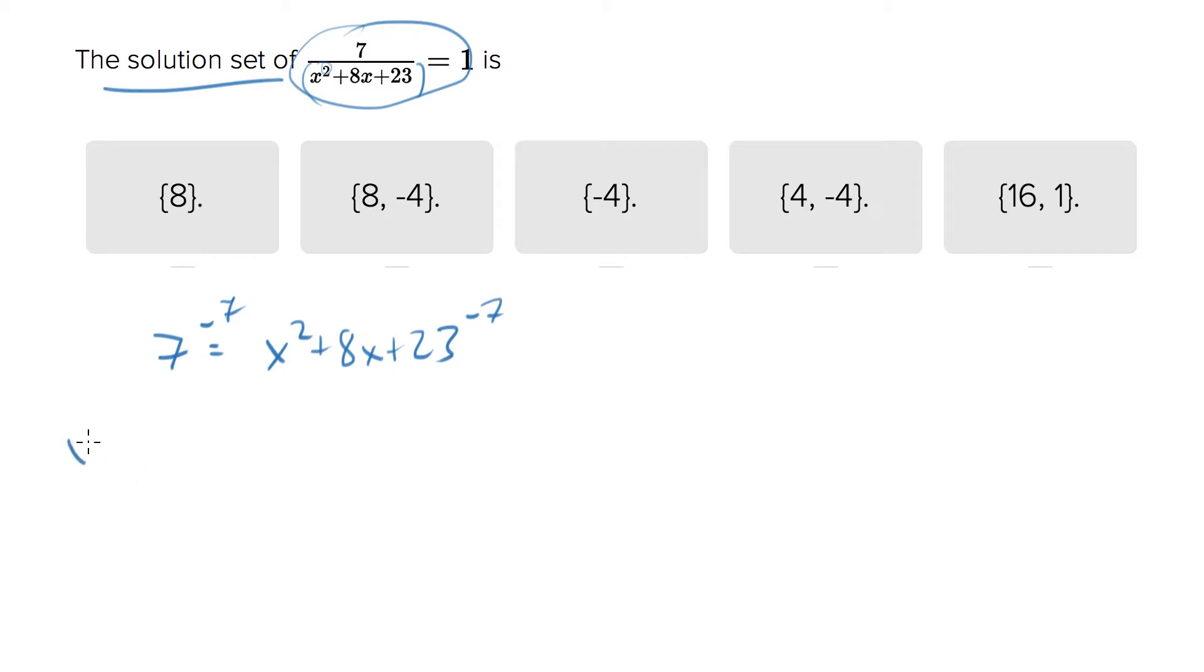Let's keep going on that. x squared plus 8x plus 23 minus 7 is 16, that equals 0.